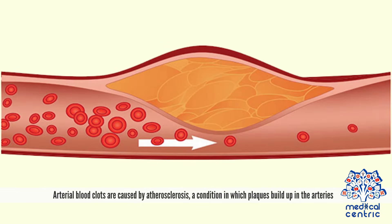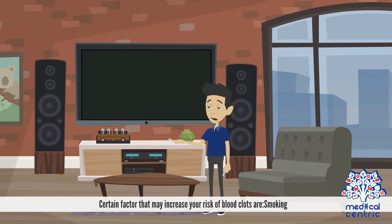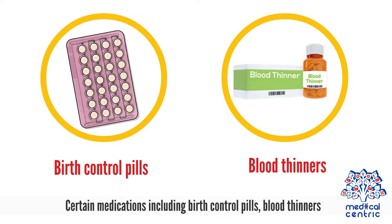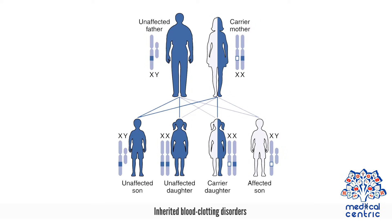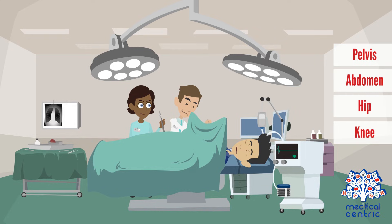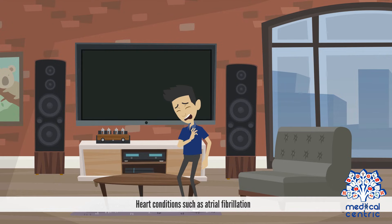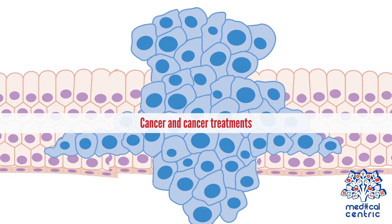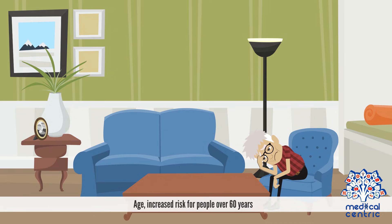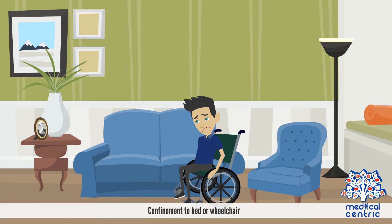Arterial blood clots are caused by atherosclerosis, a condition in which plaques build up in the arteries. Certain factors that may increase your risk of blood clots are smoking, certain medications including birth control pills and blood thinners, inherited blood clotting disorders, surgery especially of the pelvis, abdomen, hip, or knee, diabetes, high cholesterol, high blood pressure, heart conditions such as atrial fibrillation, cancer and cancer treatments, obesity, pregnancy, age with increased risk for people over 60 years, vasculitis, and confinement to bed or wheelchair.